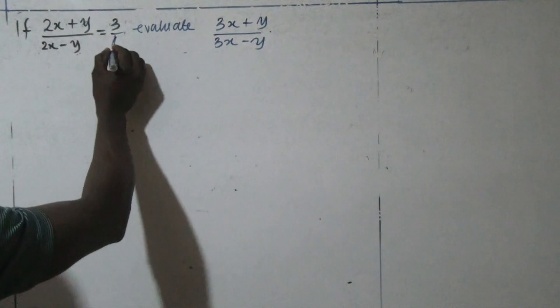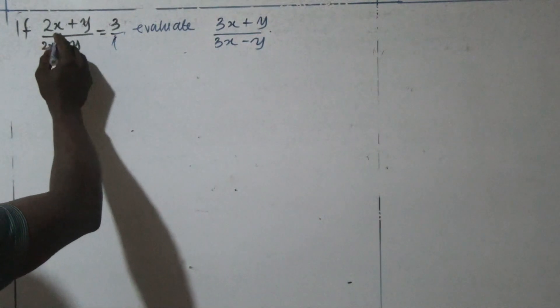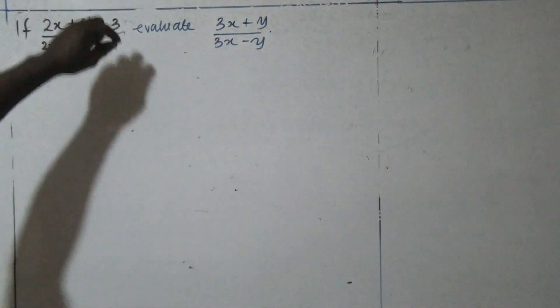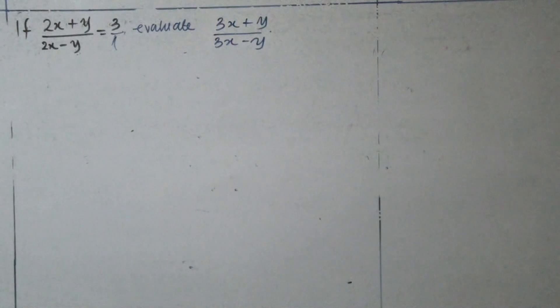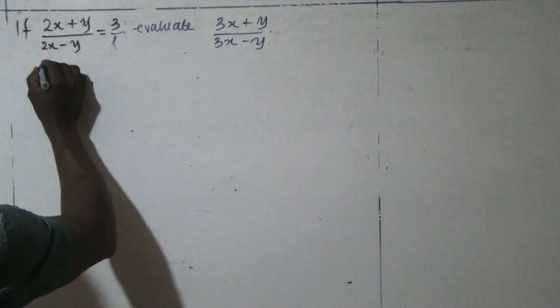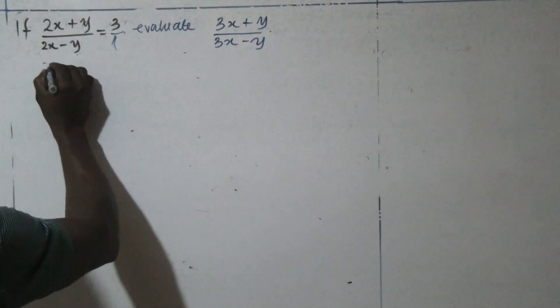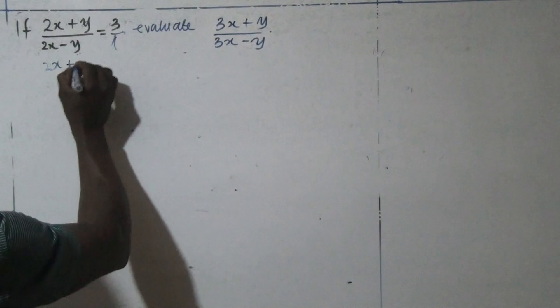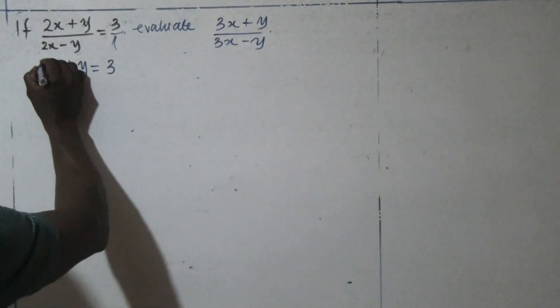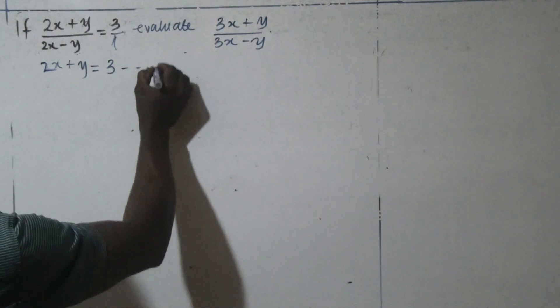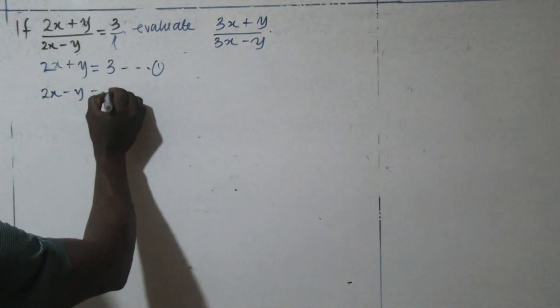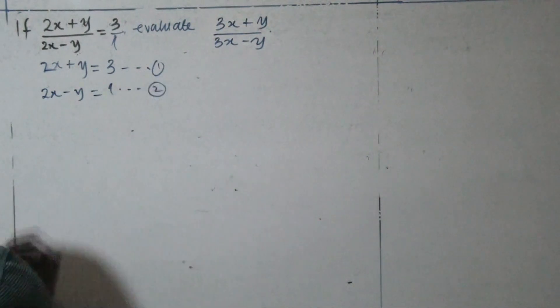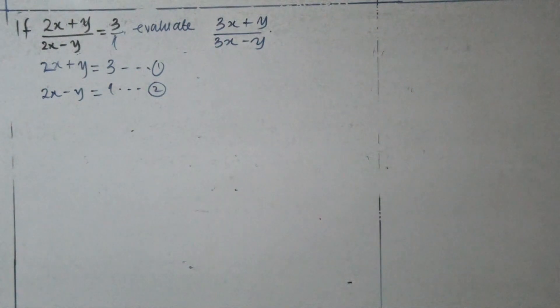And then, with the numerator of the right-hand side, with that of the left-hand side. So, we can simply say, 2x plus y equals 3. That is equation 1. Then, on the other hand, the denominator, 2x minus y is equal to 1. That gives us equation 2. So, this is how we can resolve an algebraic equation of this form.